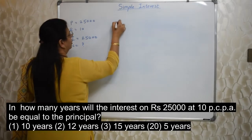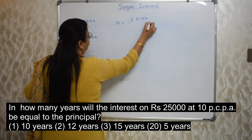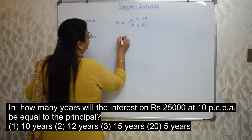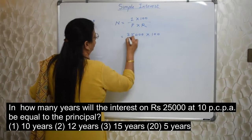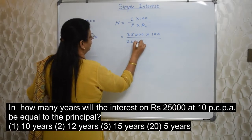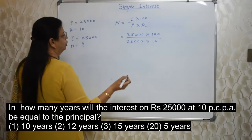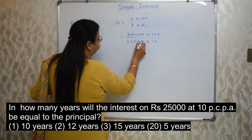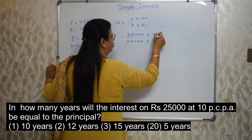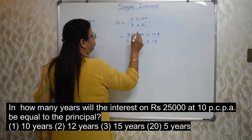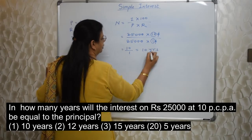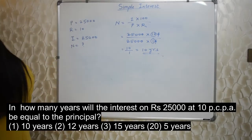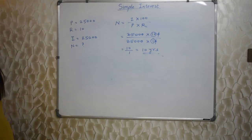Now our job is very very easy. What is the formula for N? I into 100 upon P into R. Just put the values 25,000. I is how much? 25,000 into 100 upon P is again 25,000, R is 10. This 25,000 will go with this 25,000 entirely. And 1, 0 will go with this 1, 0. What is remaining? Only 10 upon 1. 10 upon 1 means 10. 10 years is the answer. Isn't it very very easy? Only thing is reading the sum properly. Our job is done. Only thing is we have to use the formula.